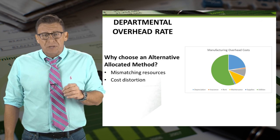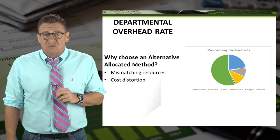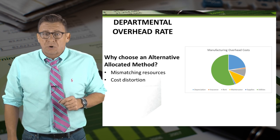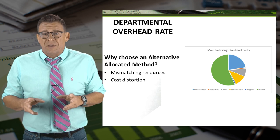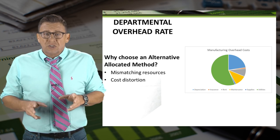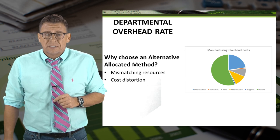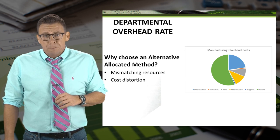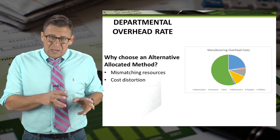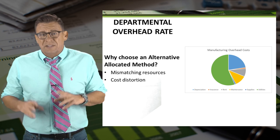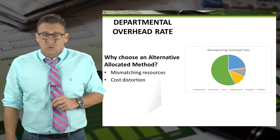Many companies choose to refine or improve their method of overhead allocation to try to achieve more accurate product costs. This is because the plant-wide rate method does not do a good job of matching the cost of overhead resources with the products. Additionally, more simple allocation systems result in over-costing or under-costing their products. This is commonly referred to as cost distortion.